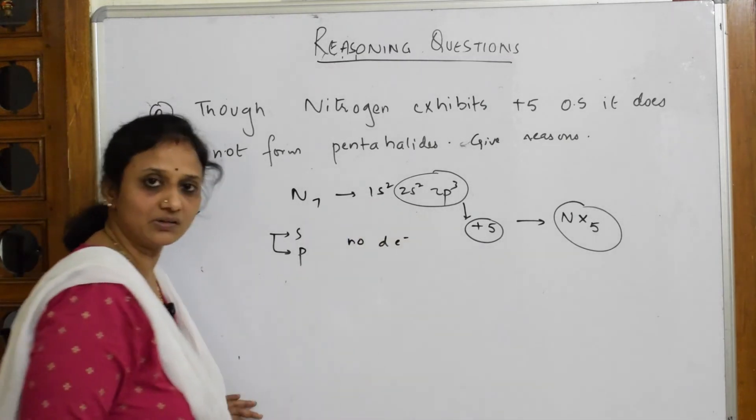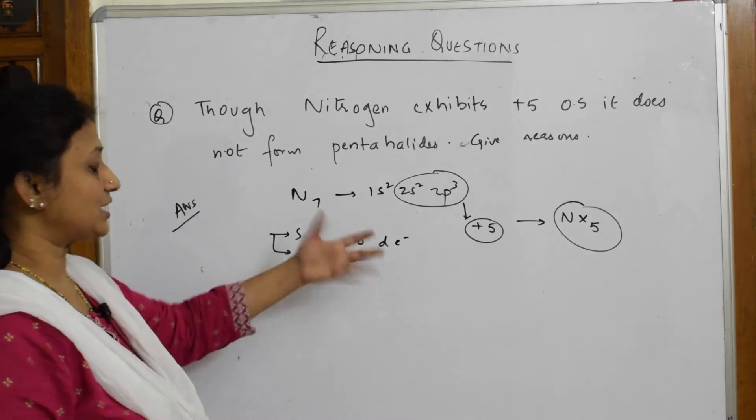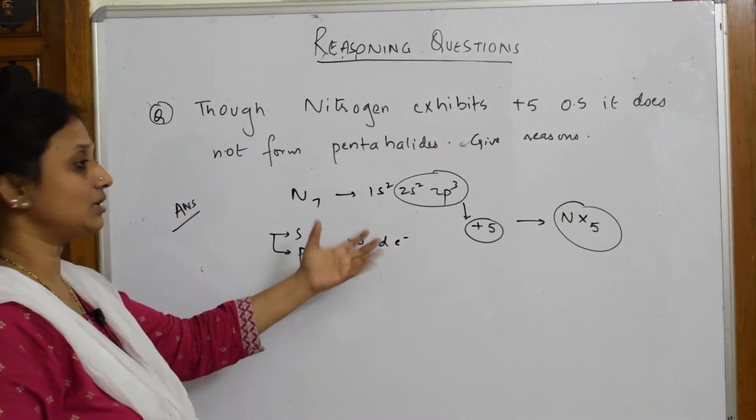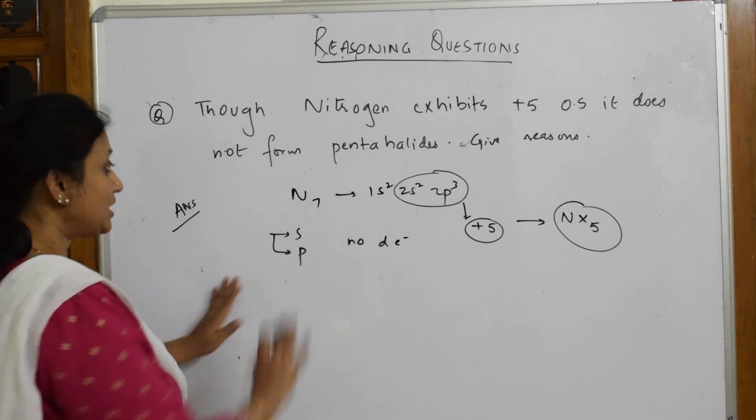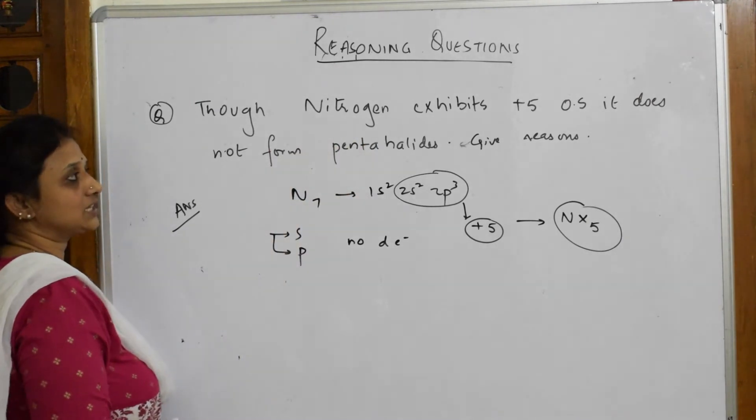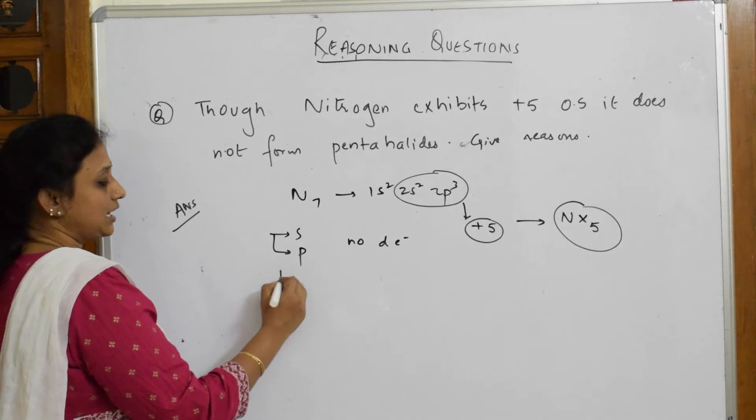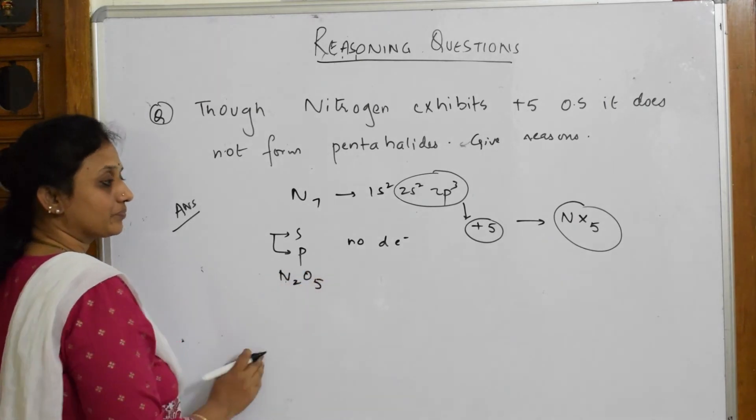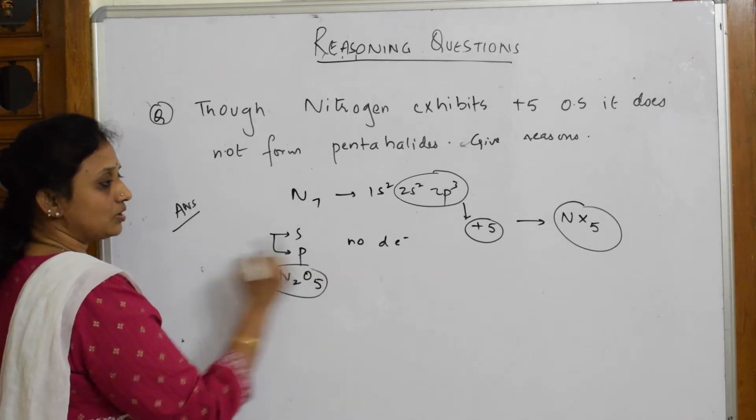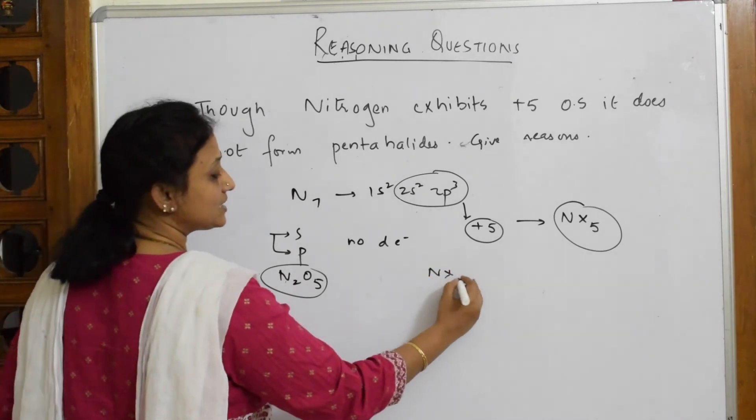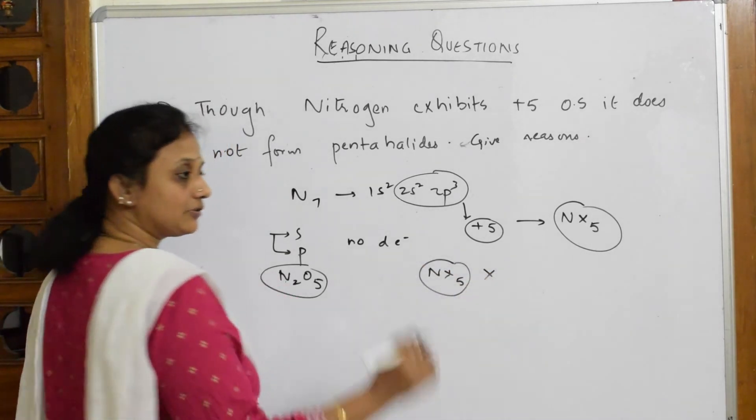No d orbital, hence no d electrons. Let me see the structure of nitrogen. For N₂O₅, when I speak about NX₅, I said NX₅ does not exist - first important concept. I'm relating this concept to come back to this.